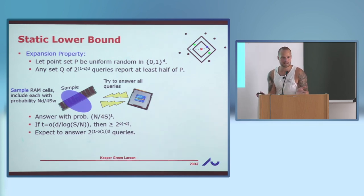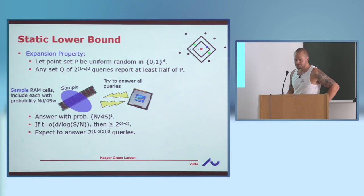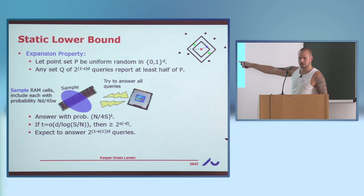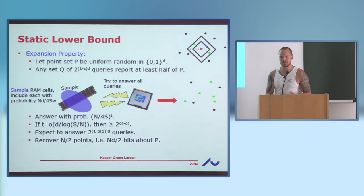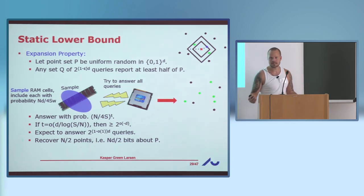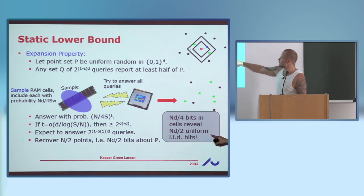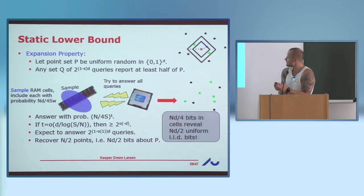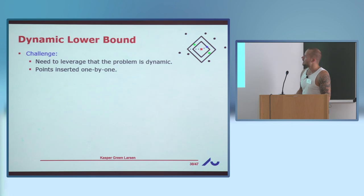But the expansion property says that this many queries will together output half of my point set. So from this small sample, I can answer a lot of queries that together output half of my point set. Each point has D bits, so I learn N·D/2 bits about my point set. But the number of bits in the cells was only N·D/4. This is basically an information-theoretic contradiction, because these were uniform random i.i.d. bits — there's no way N·D/4 bits can reveal N·D/2 uniform random independent bits. That's the compression argument, and the contradiction is to the assumption that t is little-o of D over log of the space overhead over N.